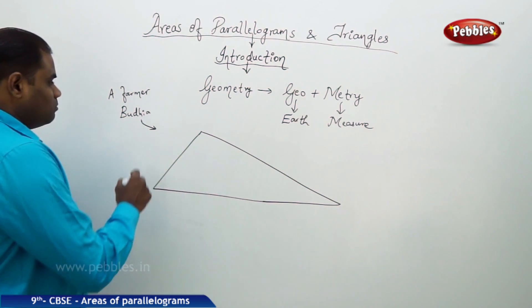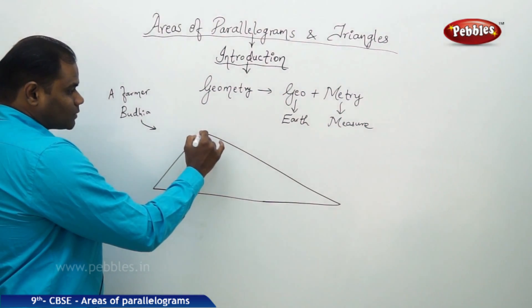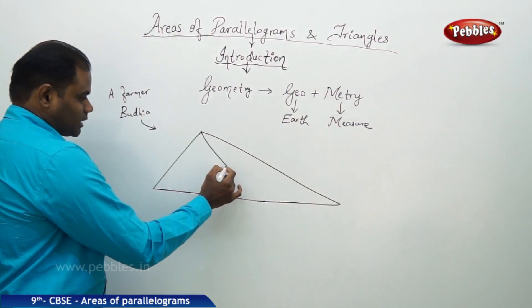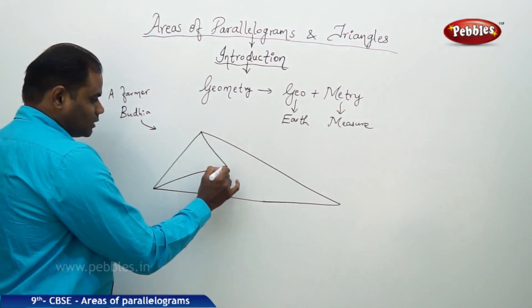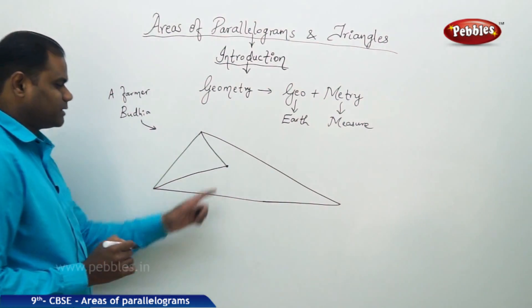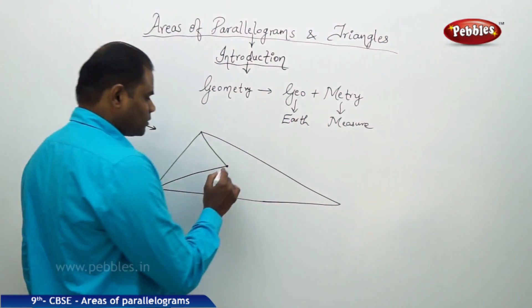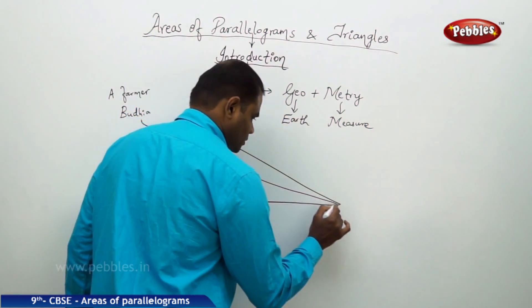So here Budiya has tried to cut his land from each corner to some estimated part in the middle. He wanted to cut his land in this region.